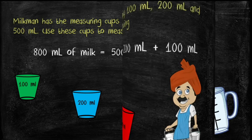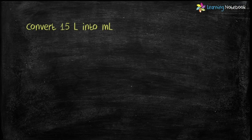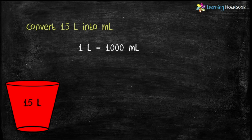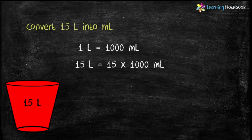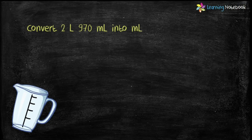Now let's do some questions based on conversion of liter into milliliter. Question: convert 15 liters into milliliter. We know one liter equals one thousand milliliter, therefore 15 liters equals 15 into 1000, which is 15,000 milliliter.